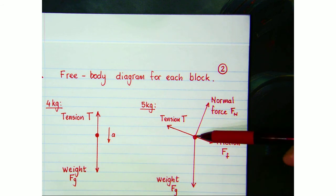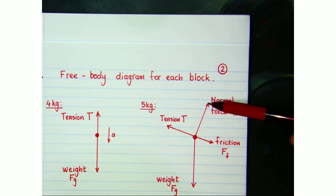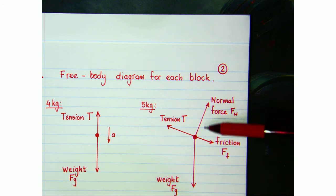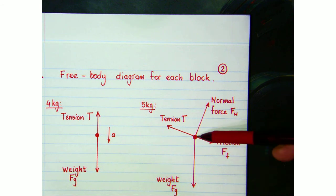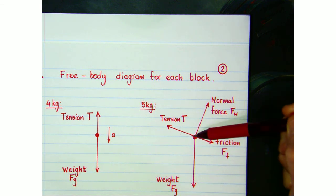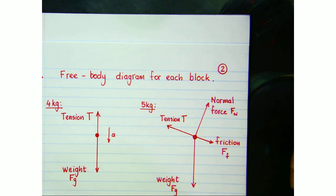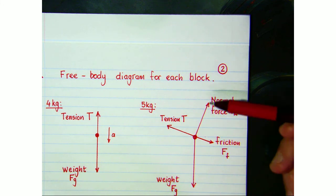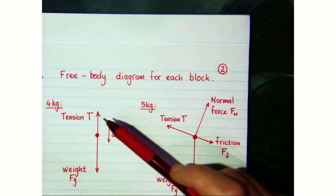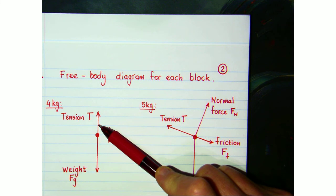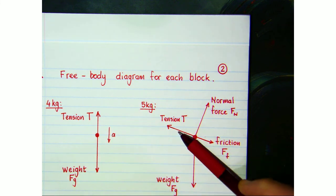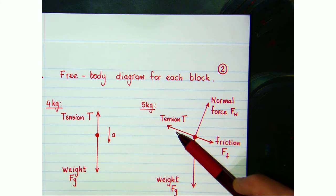For the 5 kg block there are four forces: its weight acting vertically downward, a normal force perpendicular to the slope, friction opposing its motion up the slope, and the same tension force acting up the slope. The tension on the 4 kg and the tension on the 5 kg are identical because it is the same string.